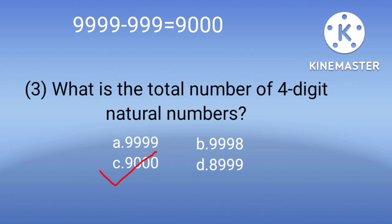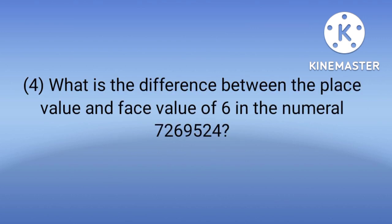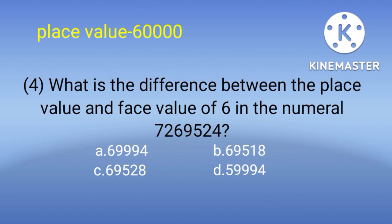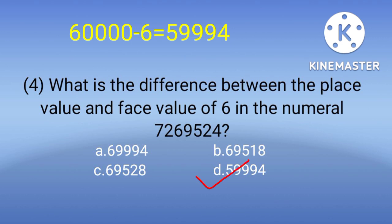Number 4: What is the difference between the place value and face value of 6 in the numeral 7269524? These are the options. First we need to know what is place value and face value. Place value is the position value of 6 in this number, which is 60,000. Face value is simply 6. To find the difference, we subtract 6 from 60,000. The answer is 59,994.